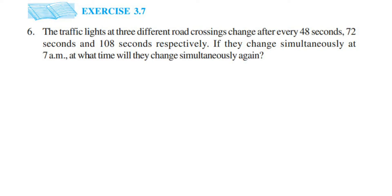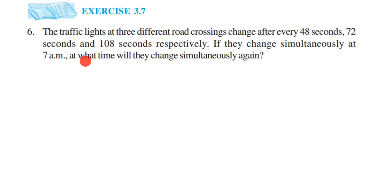Hey everyone, here I am doing exercise 3.76, question chapter: displaying number of classics. The question is about traffic lights at three different road crossings that change after every 48 seconds, 72 seconds, and 108 seconds respectively. If they change simultaneously at 7 a.m., at which time will they change simultaneously again?